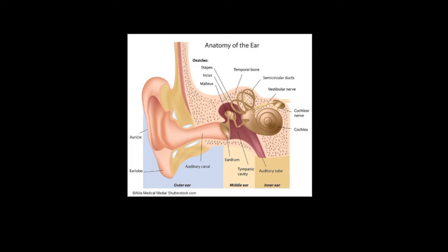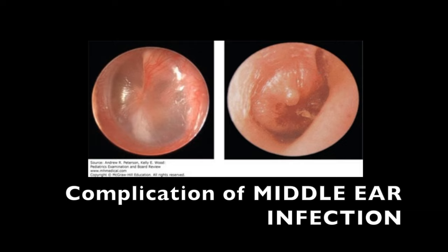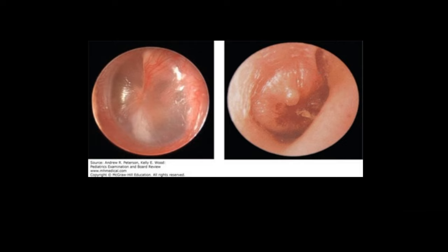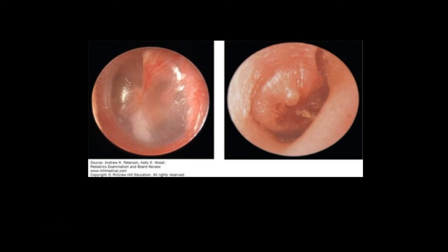Mastoiditis is a complication of a middle ear infection, and it happens when the infection in the middle ear spreads into the mastoid bone. The most common cause is Streptococcus pneumoniae. On screen you can see a normal tympanic membrane with a light reflex and bony structures of the middle ear, contrasted with an abnormal tympanic membrane that is very red and inflamed, which is where the infection originates.